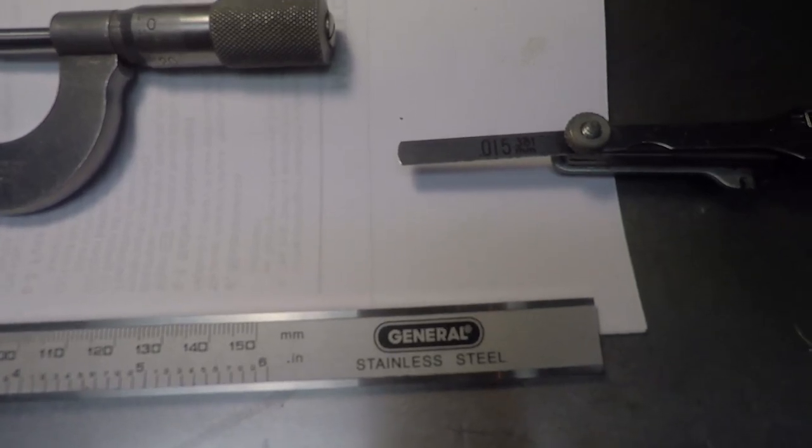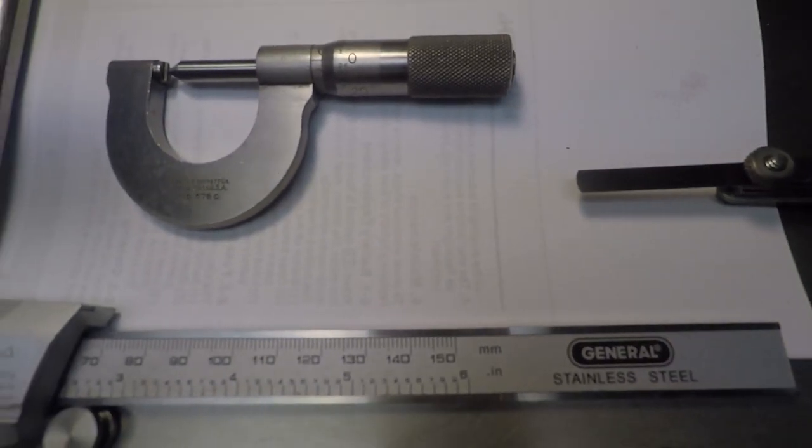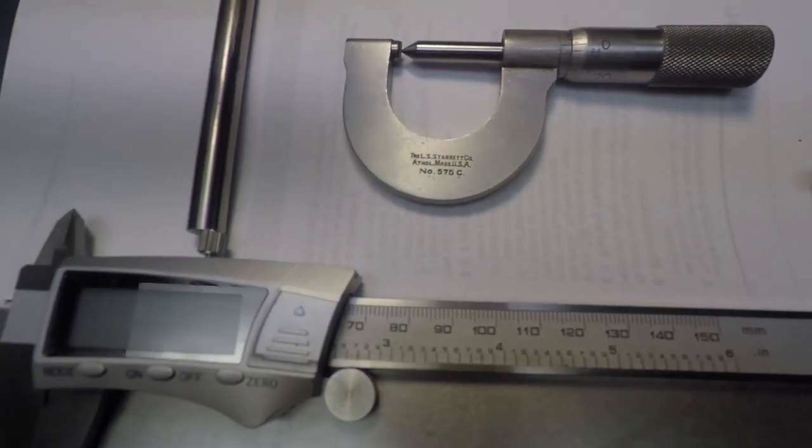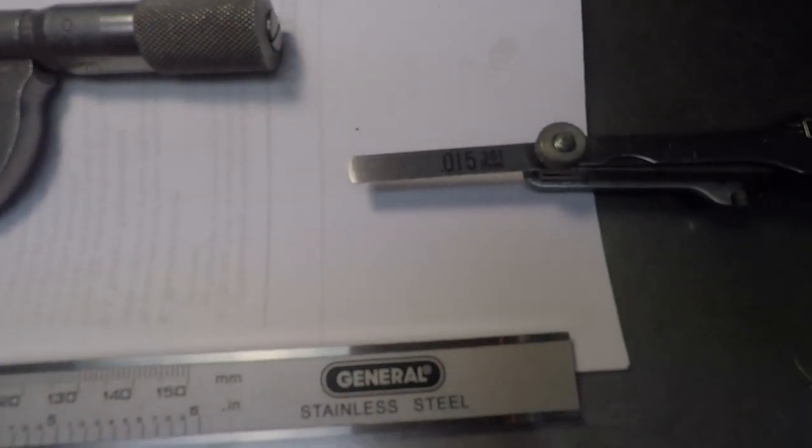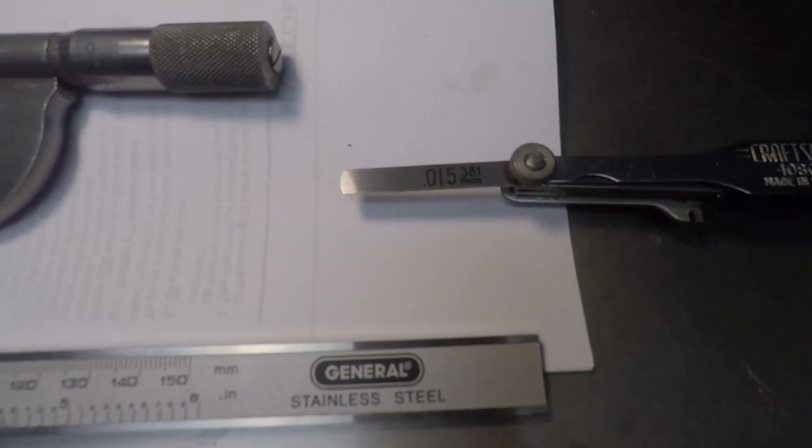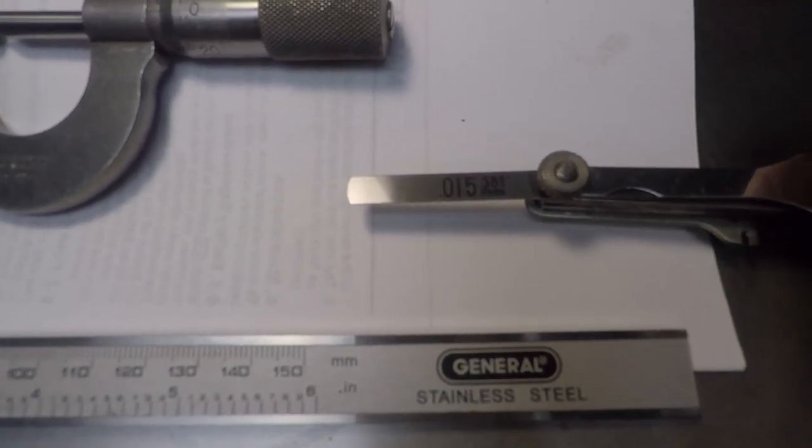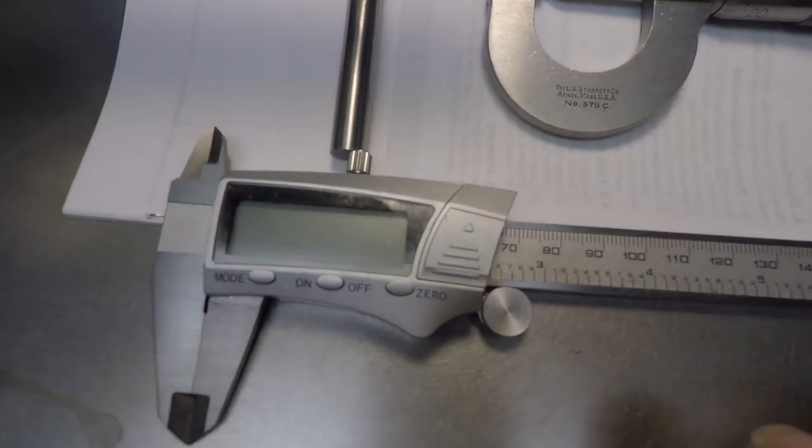When I go and check the tolerance on this micrometer, the Starrett, with a three-eighths bar or a spark plug gap at any one of the settings, currently zero, one, five, I get accurate readings from the General digital micrometer.